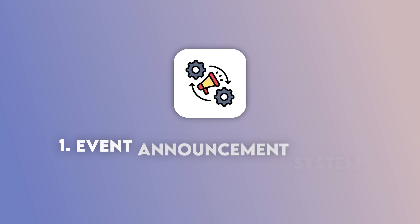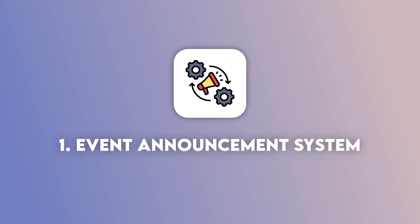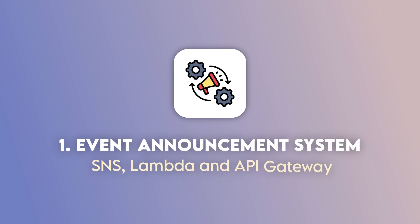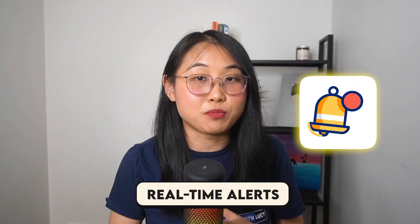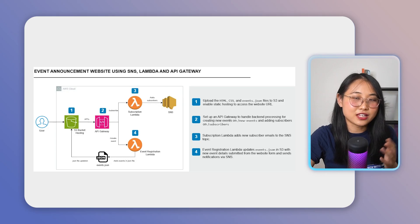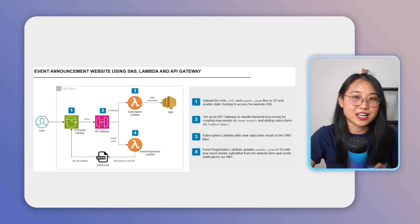Project number one is to create an event announcement system with SNS, Lambda and API Gateway. This kind of system is useful for setting real-time alerts and later I'll be sharing some situations where it will come in handy. Here's the architectural diagram of the project and the steps you'll need to take.